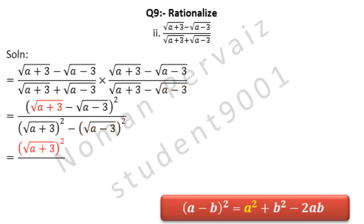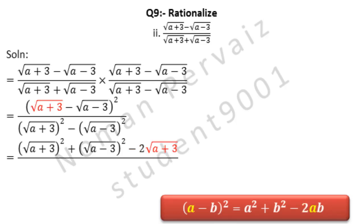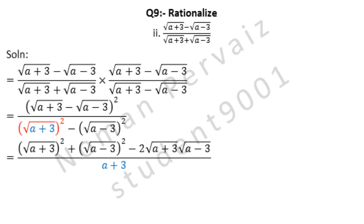Here we are going to apply the formula: (A - B)² = A squared plus B squared minus 2AB. So we write A squared as under root A plus 3 whole square, plus comes from the formula. We have to write B squared, so we write under root A minus 3 whole square. Minus 2 comes from the formula; then we have to provide A, so we write under root A plus 3; then we have to provide B, so we write under root A minus 3. Here square and square root are cancelled, so A plus 3 is left only. Minus comes as it is; here square and square root are cancelled, so A minus 3 is left only.